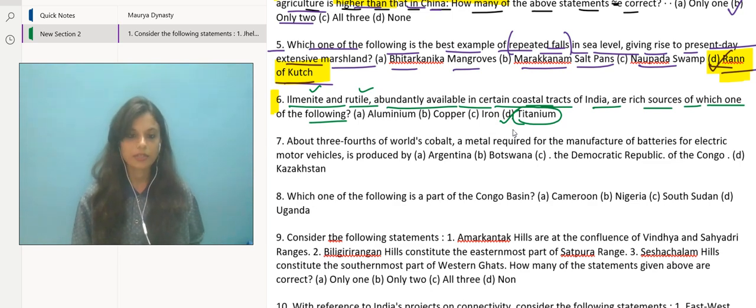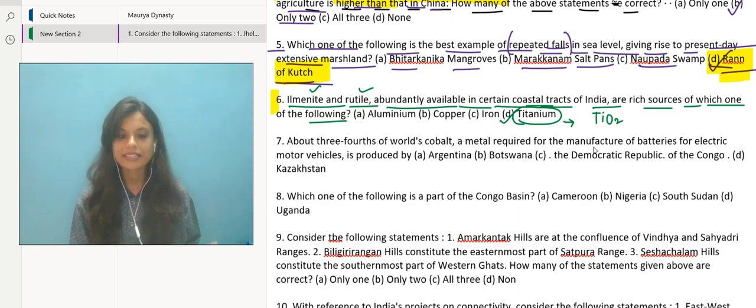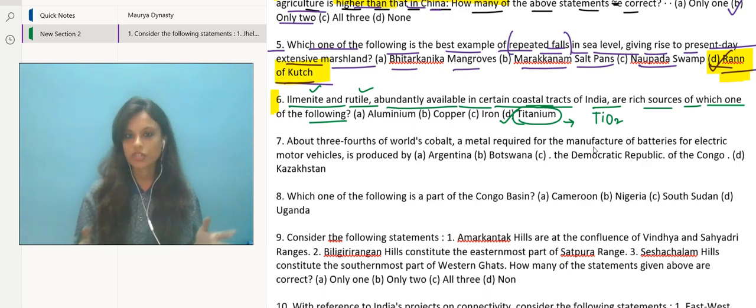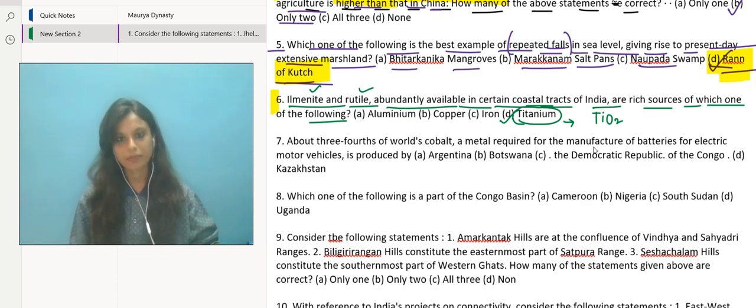Ilmenite and rutile are minerals that contain titanium dioxide. Titanium dioxide formula is TiO2, and this is the main source of titanium. Titanium is a valuable metal which is known for its high strength, low density, and corrosion resistance, and it has various applications in industries such as aerospace industries, automotive industries, construction industries, or electronics industries. So your correct answer is D.